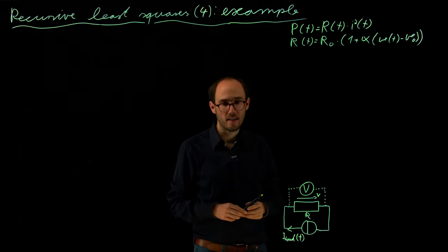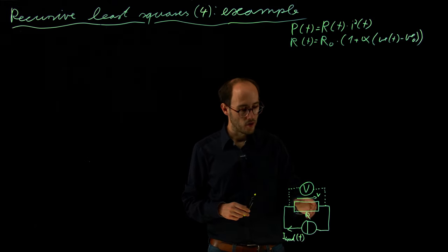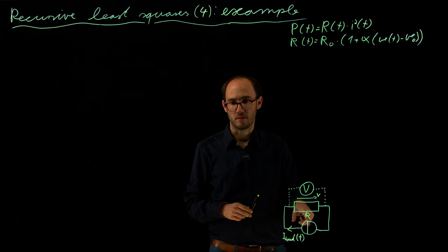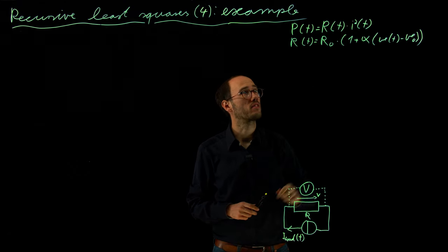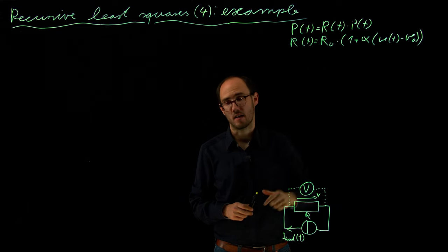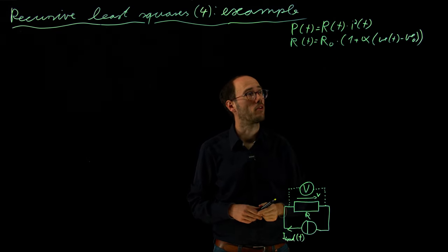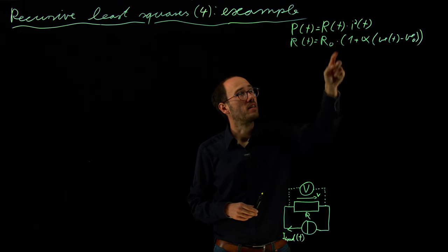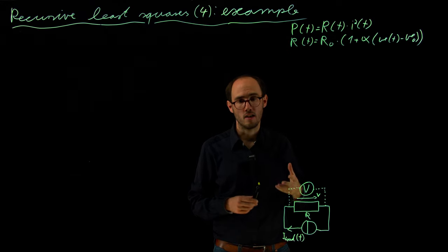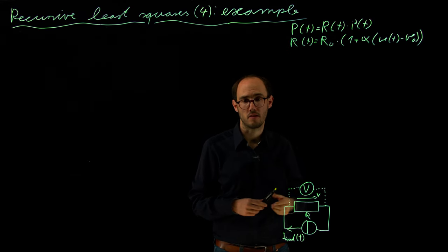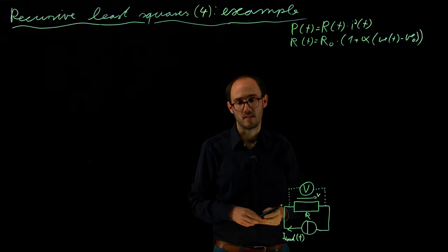The motivation of this video is that if we send a certain amount of current through this resistor, we will basically have some power losses, which are R times I squared. So normally you know that from high school already. However, the resistance of the resistor is typically not a constant value if we look into the technical details of this very simple circuit.